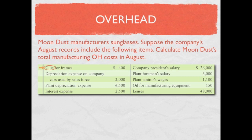Depreciation expense on company cars used by the sales force — the word 'sales' tells us this is a selling expense, not a product cost; it's an operating cost. Plant depreciation expense — 'plant' is the key word. Anytime you see plant, factory, or manufacturing, that's a clue it's overhead; plant depreciation falls under the 'other overhead' category. Interest expense is an operating expense — actually an other expense — so it is not a product cost.